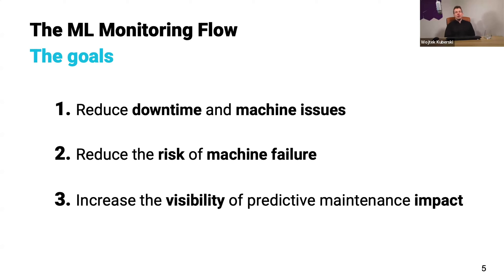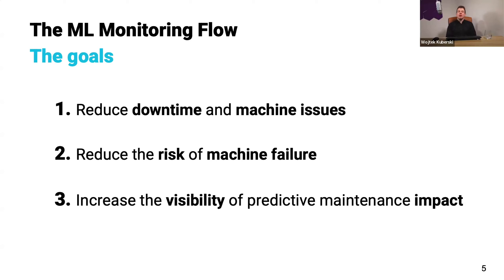Another thing we want is full observability of model performance and the ability to reduce the risk of machine failure. A machine can fail if our predictive maintenance model fails — if it says you should not maintain a machine that actually needs maintenance, in extreme cases this might lead to machine failure or at least machine issues, which will have downstream impact. So we really need to monitor performance to reduce that risk.